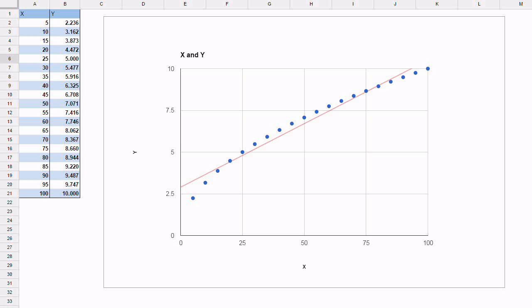So here we have the scatter plot of y versus x, the data plotted as blue dots, and we fitted the default which is a linear trendline, which is this red line here.